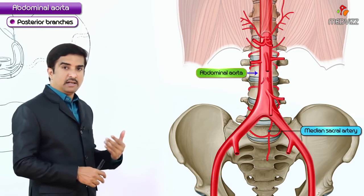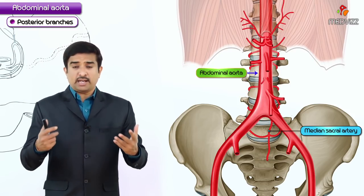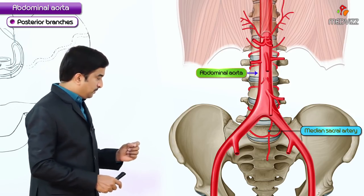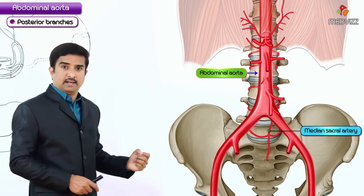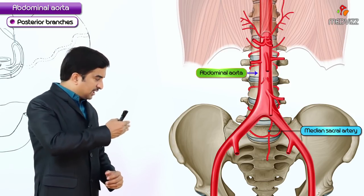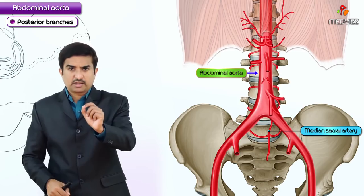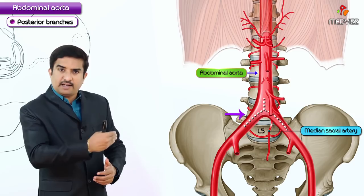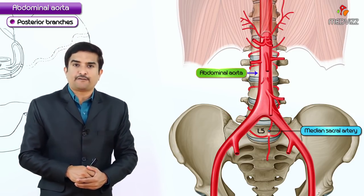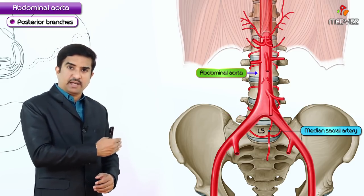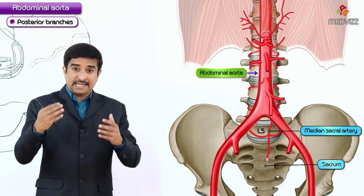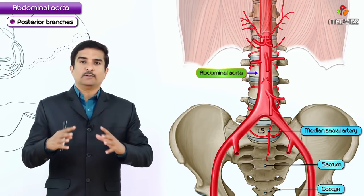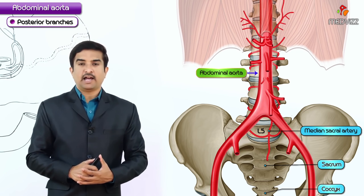The median sacral artery is the final posterior branch of the abdominal aorta. It arises from the posterior surface of the abdominal aorta just superior to the bifurcation and passes inferiorly over the anterior surface of the lower lumbar vertebrae, then over the anterior surface of the sacrum and coccyx, supplying those structures.